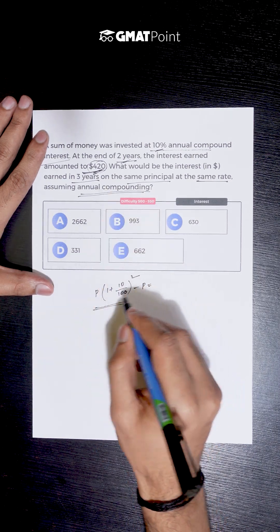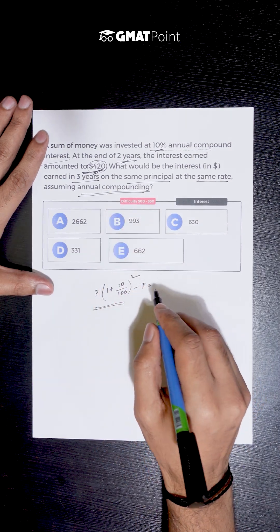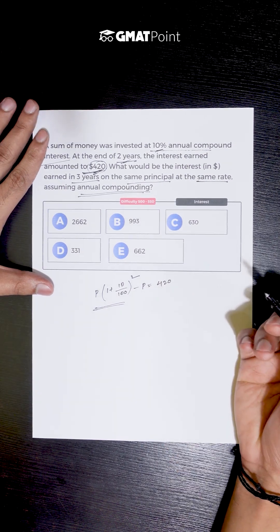So the value of interest can be calculated by removing the principal amount from this, and the interest can be equated to 420.